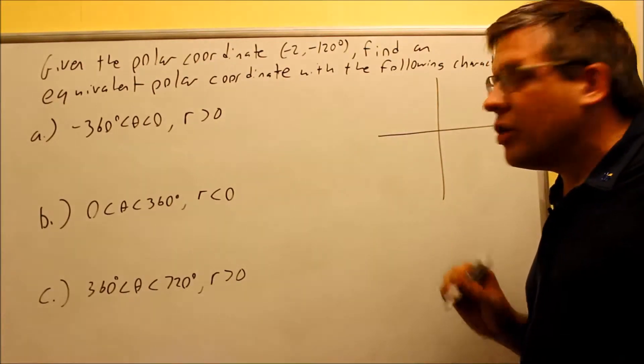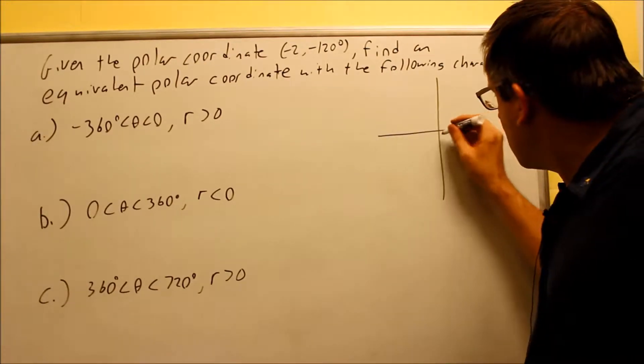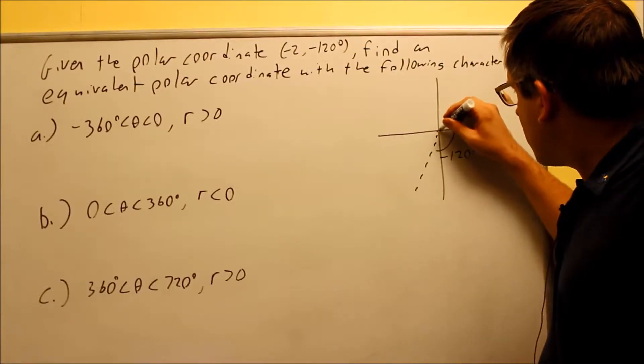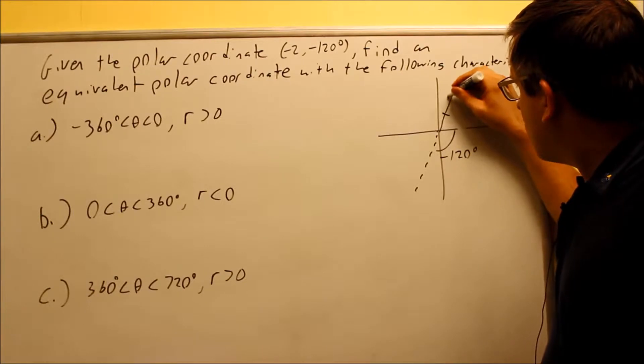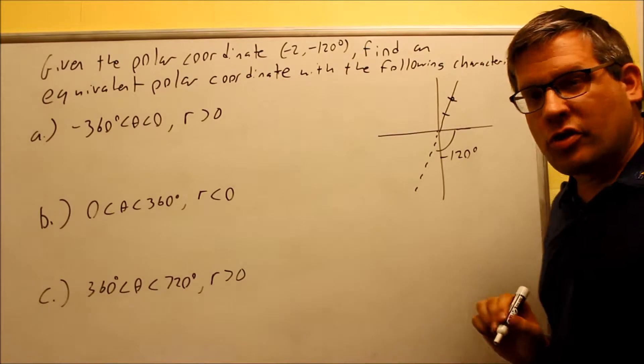I want to plot negative 2 and negative 120. So negative 120, I need to go clockwise. That's going to be this dotted line here. That's going to be negative 120. Reverse it 180 degrees, that takes me into the first quadrant. And then I'm going to count two spots so I do get something that ends up in the first quadrant there as a result.